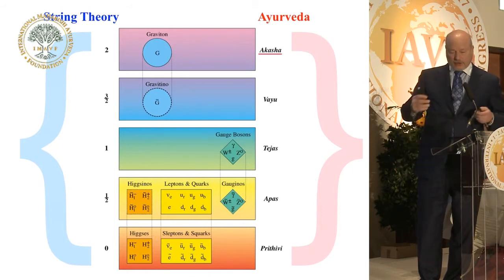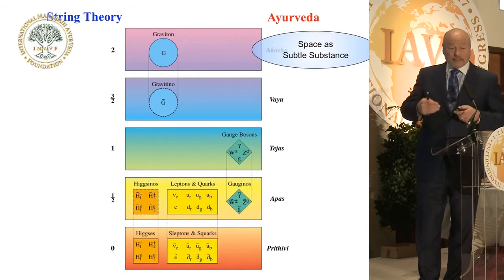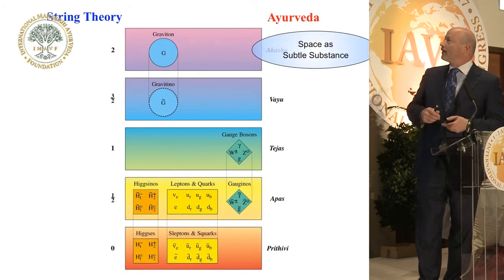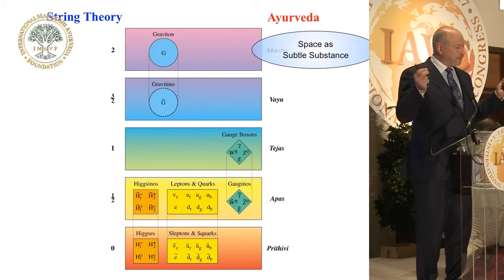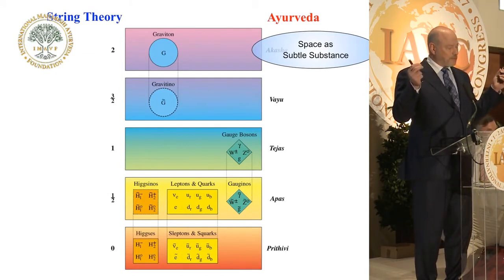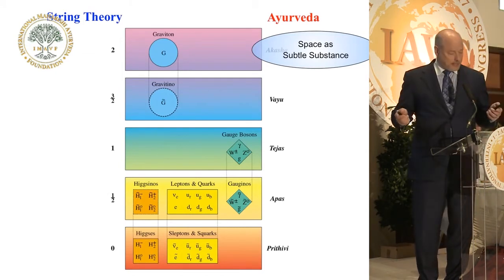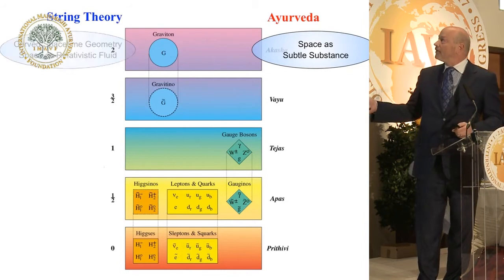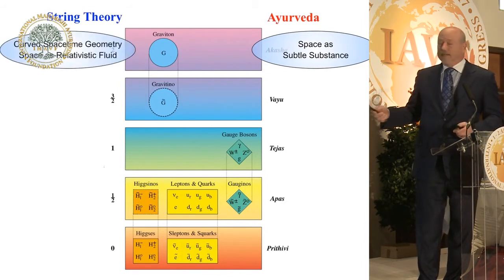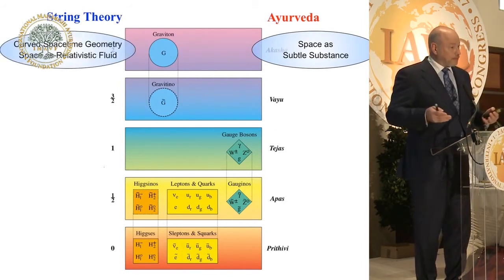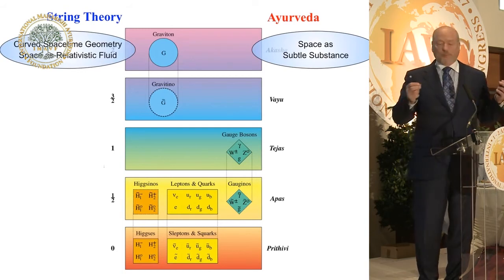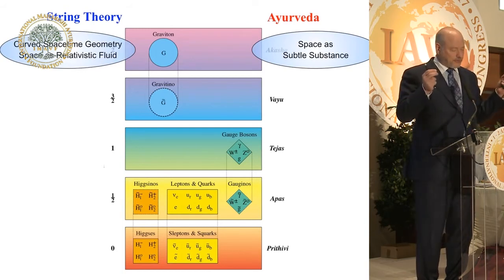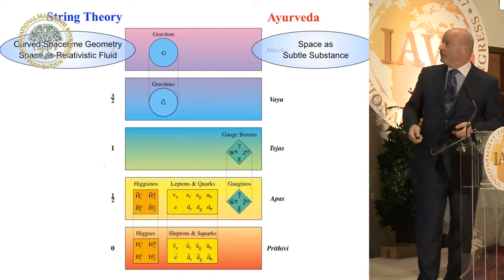And it's not just a numerical correlation, but it's an exact functional equivalence — different names for the same thing. Akasha means space — not space as nothing, but space as subtle substance. Similarly, the graviton field is the field of gravity, the field of curved space-time geometry: space as subtle substance, space as relativistic fluid, the finest of all substances in the universe.